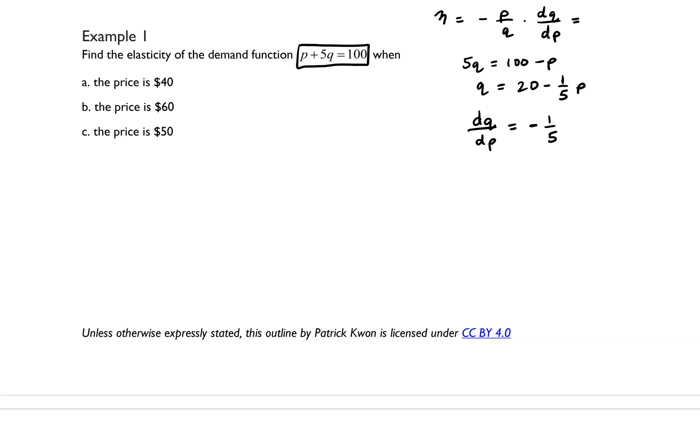So in all of these, our eta is going to be negative p over q times negative 1 fifth, since negative 1 fifth is a constant, so I'm just going to replace that in. So for all of these parts a, b, and c, we're just going to plug in the price, which is $40, $60, and $50. We're going to plug that into the p here, and we just need to figure out, for example, when the price is $40, what is the quantity going to be? And we can figure that out by plugging it into that equation.